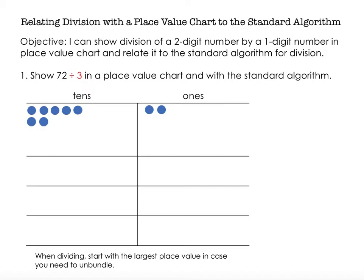When dividing, we always start with the largest place value. So I know with adding and subtracting, we always start with the smallest place value, but we want to start with the largest place value with division in case we need to unbundle, in case we need to shift some of my tens to my ones place or hundreds to tens place or something like that. So we're going to start with the larger of the two place values. In this case, that's the tens place.